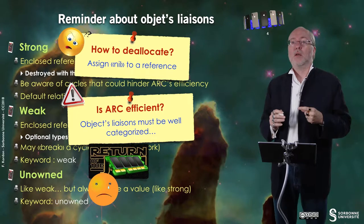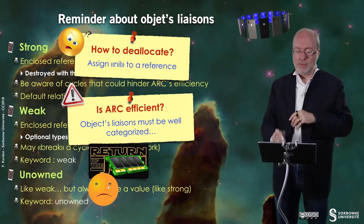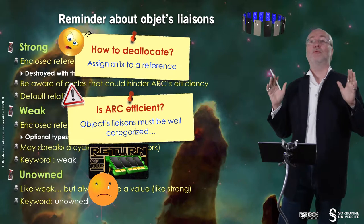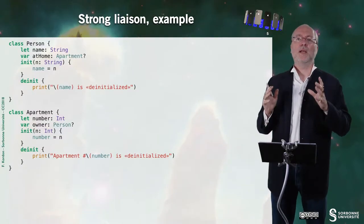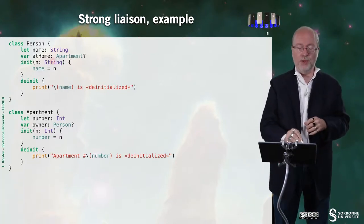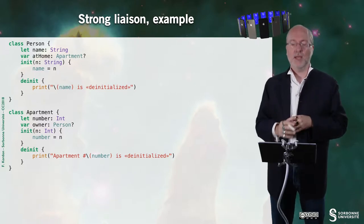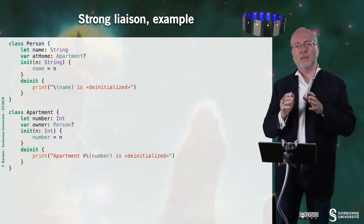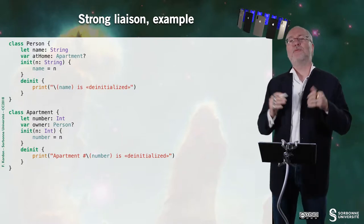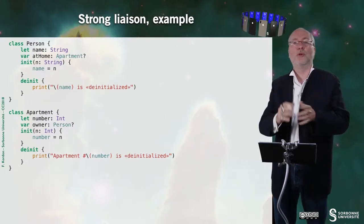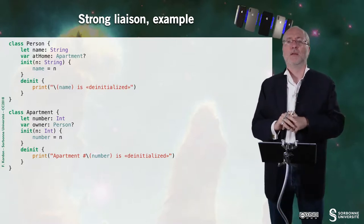ARC is efficient, but it's efficient only if the liaisons between objects are well categorized. So it means there is a return of memory problems — you thought you had it for free. You have to think about this categorization. Let's have an example of strong liaisons. Here I have a class Person with a name and a property 'appt' that refers to an apartment he's supposed to live in. I have an initializer and a deinit function that is invoked when you destroy the object — here I just want to trace whether the object is destroyed.